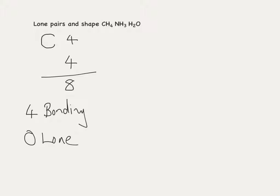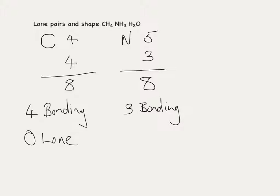Now let's look at ammonia. The central atom is nitrogen, which has five electrons in the outer shell, three of which are bonded, giving us a total of eight electrons. This means that three are bonding pairs of electrons and we've got one lone pair of electrons.